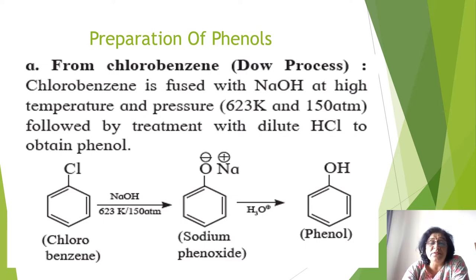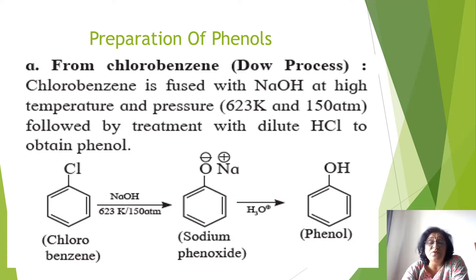In Dow's process, chlorobenzene is fused with NaOH at 623 Kelvin and 150 atmosphere pressure. You get sodium phenoxide — chlorine is replaced by O⁻Na⁺. This sodium phenoxide on hydrolysis with dilute HCl gives you phenol.